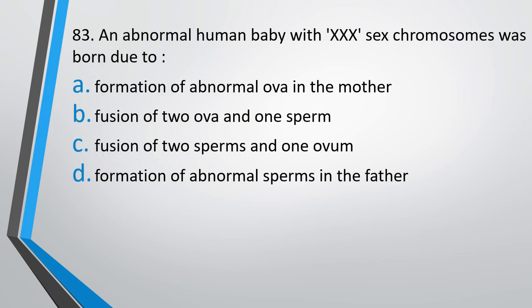Question number 83. An abnormal human baby with XXX chromosome was born due to: Formation of abnormal ova in the mother; Fusion of 2 ova and 1 sperm; Fusion of 2 sperm and 1 ovum; or Formation of abnormal sperm in father. Correct answer is option A — it is due to formation of abnormal ova with 2X chromosomes in the mother.